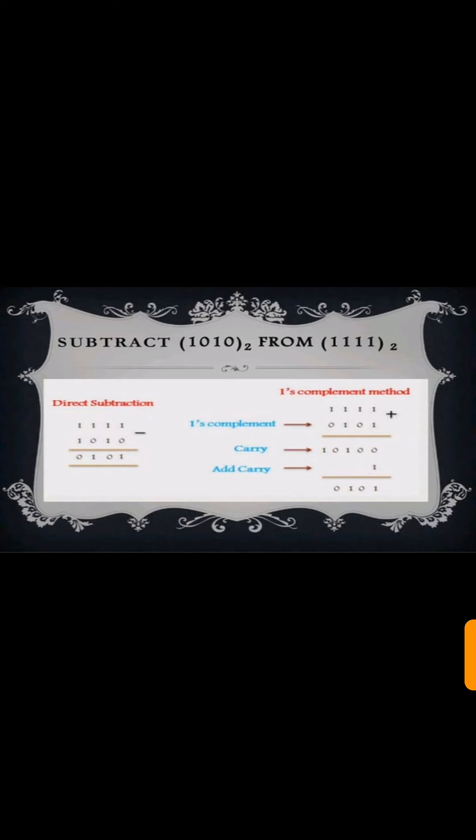For two's complement subtraction, we have done one's complement of 10, that is 0101. Then we have done addition of 15 and 10's complement.